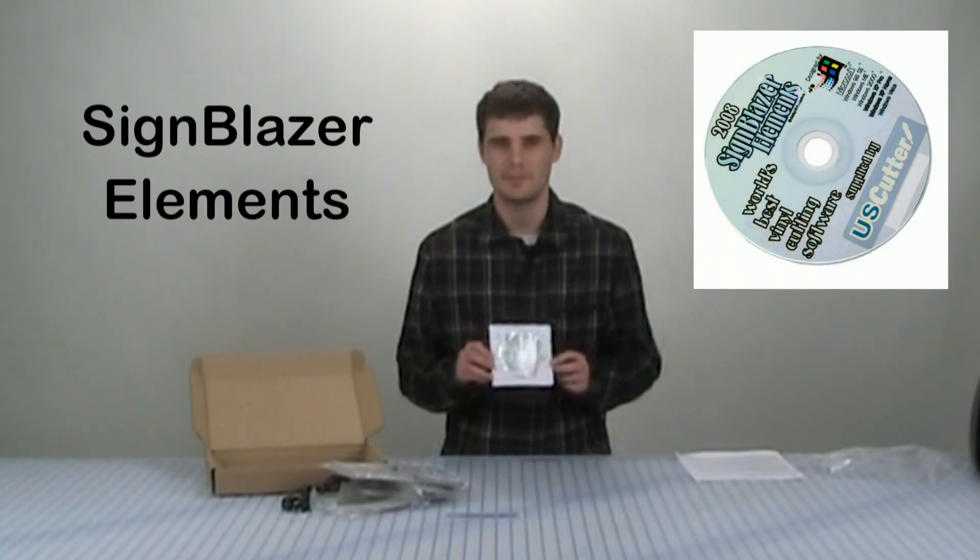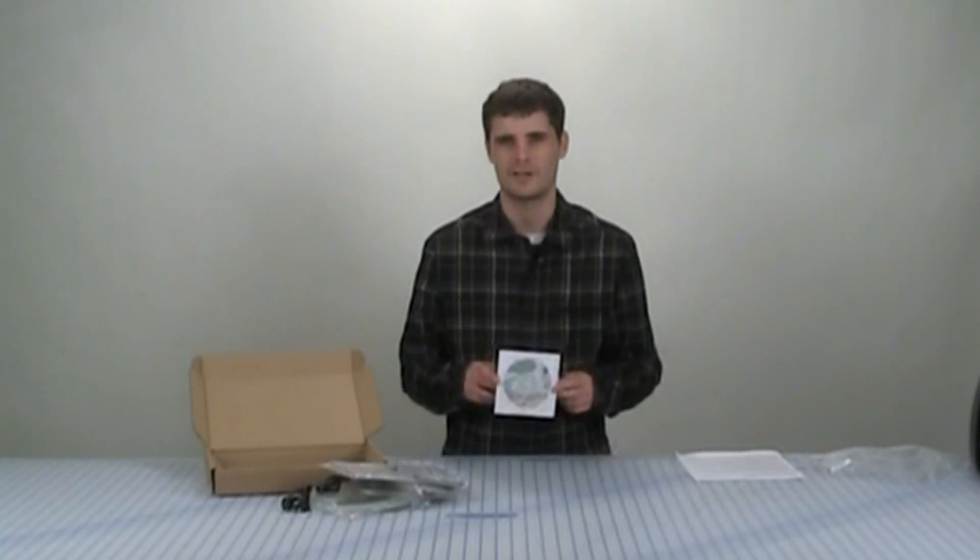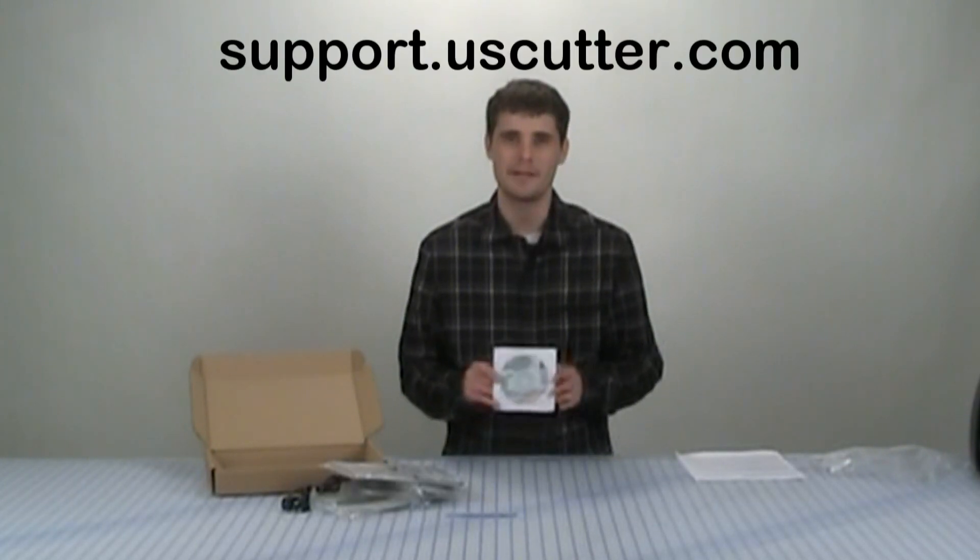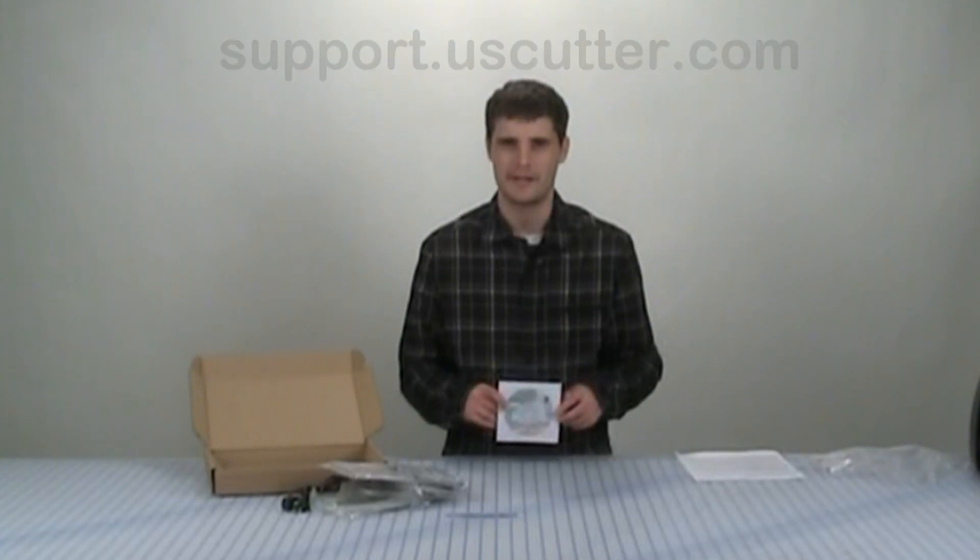There may also be a disc inside your accessories box that's labeled Signblazer Elements. This is one of the cutting softwares that's going to come with your MH series vinyl cutter. If it does come in the box you can install it. However we'd recommend that you go on our website and download the most updated version of it.